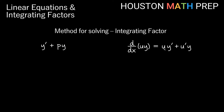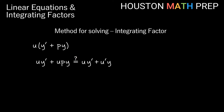To make the left hand side look like the product rule, multiply it by the function u — some arbitrary function. That gives u·y' plus u·p·y. Comparing with the product rule u·y' plus u'·y, we need u' to equal u times p. If that's true, we'll have a product rule on the left hand side.